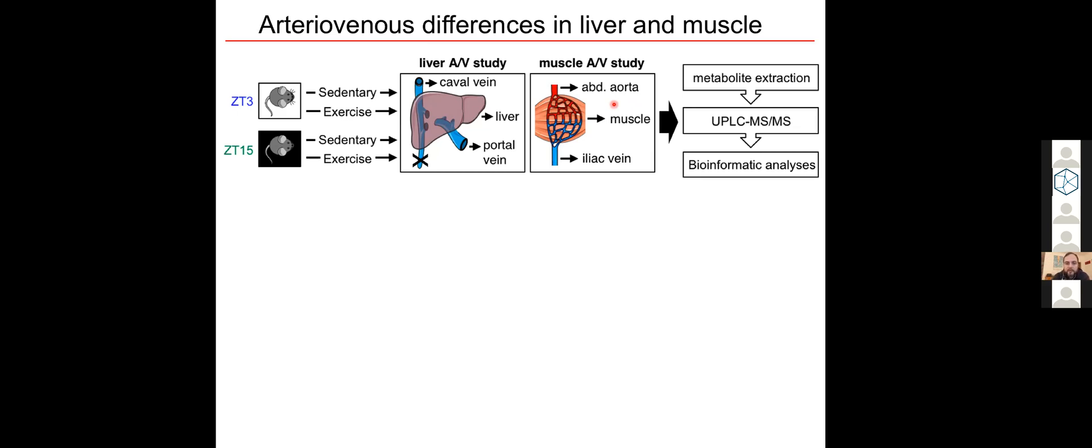They also collected blood draining out of these tissues by sampling from the superior vena cava and from the iliac vein from the skeletal muscle. By comparing these relative blood metabolite levels going into and going out of these tissues, we're able to calculate the net metabolite balance across these tissues, across the liver and across the skeletal muscles.